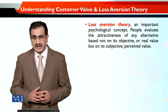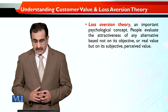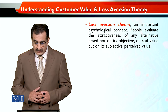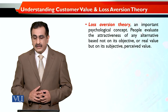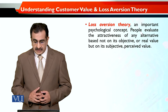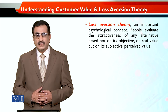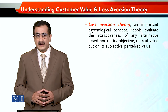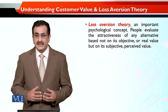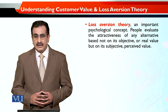इसके साथ साथ एक और element है जो के related है with the identity of such a segment, और वो है loss aversion। Loss aversion कहते हैं कि यह एक अहم psychological concept है — people evaluate the attractiveness of any alternative based not on its objective or real value but on its subjective or perceived value. यानि के वो एक खास purpose के लिए product बनाई गयी है, उसका जो objective है वो एक नई technology के जरीए आपके जो needs हैं उनको बेहतर और efficient तور पर पूरा करना है।